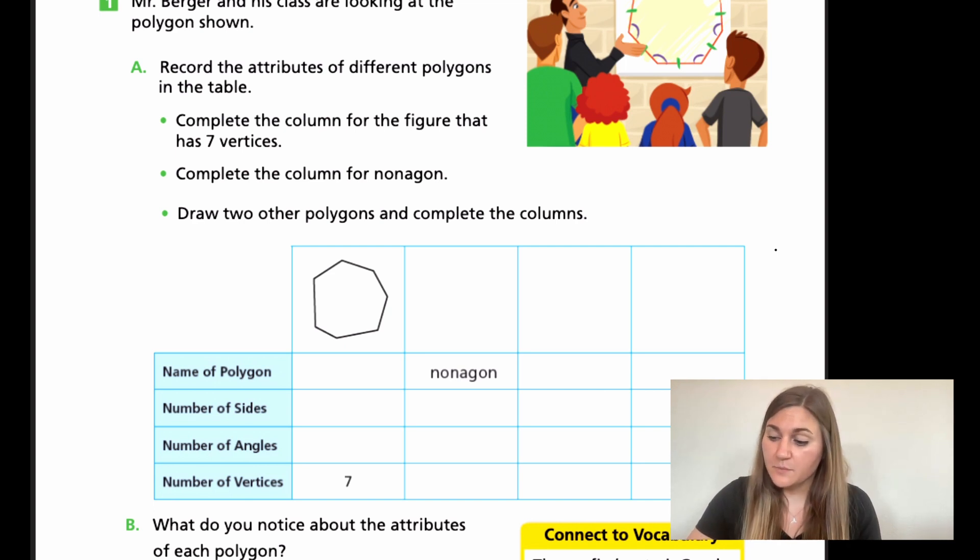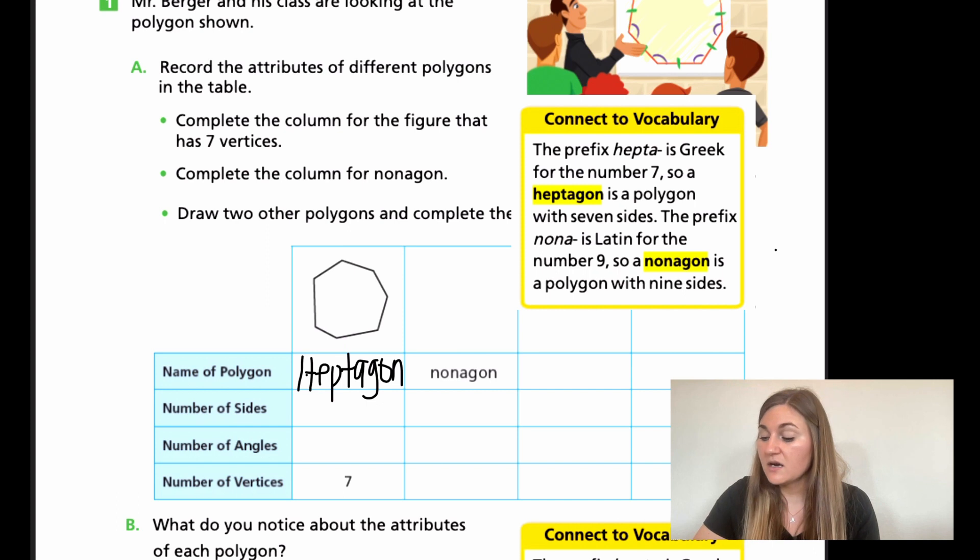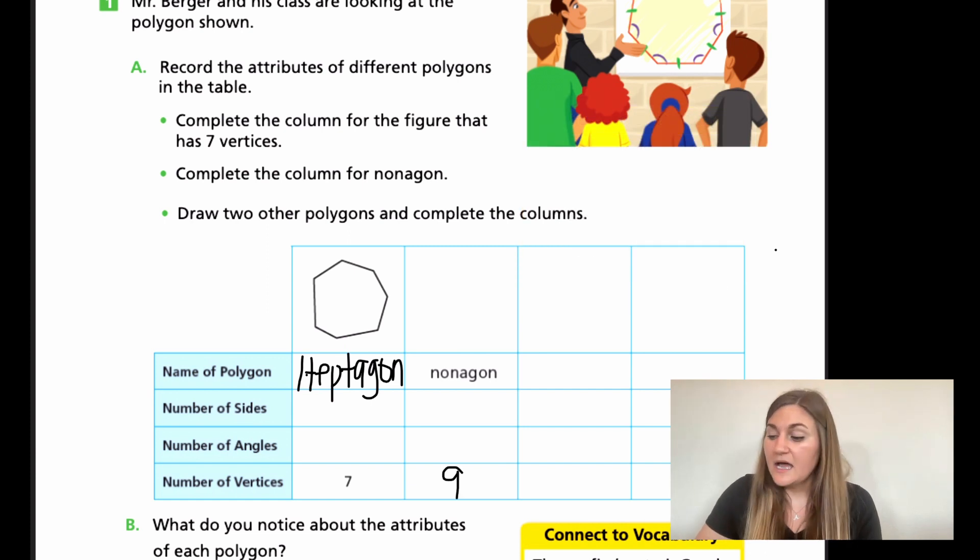Okay. So the name of this polygon with seven sides is called a heptagon. And you can see that over in the yellow connect to the vocabulary, right? A heptagon is with seven and a nonagon is with nine. All right. So then, you know, that this nine, a nonagon, nine-agon, is going to have nine vertices. Okay. And then you can just draw any shape with nine sides. It can be completely ridiculous looking. It's just a shape that connects with nine sides. However you want to do that is totally fine.